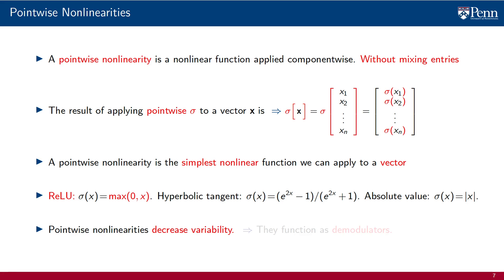An important observation about these three specific point-wise nonlinearities and other possible choices is that they all reduce variability. The ReLU eliminates the variations of all negative components. The hyperbolic tangent saturates large entries. The absolute value makes all negative entries positive. In the parlance of signal processing, this is called a demodulation — it generates signals with more energy concentrated in low frequencies, in signals that change more slowly over the graph.